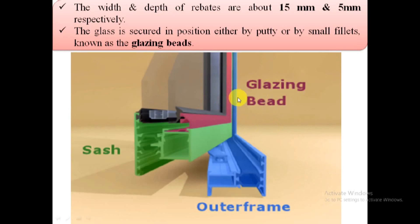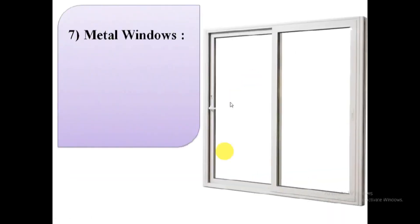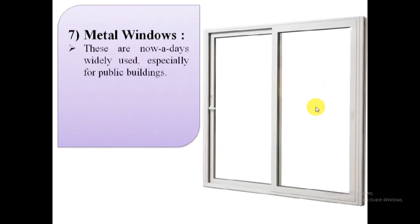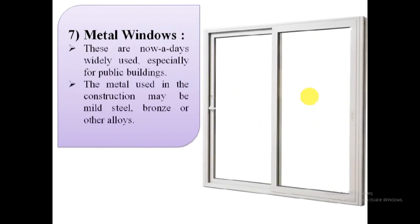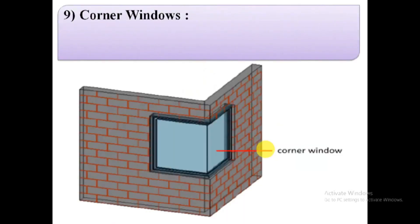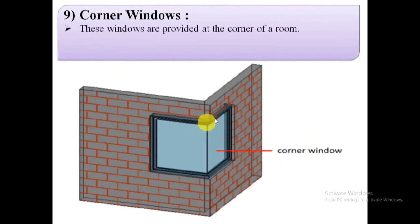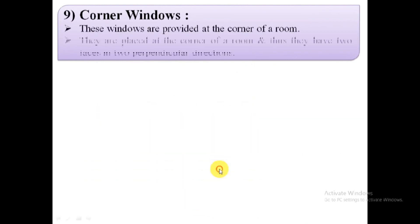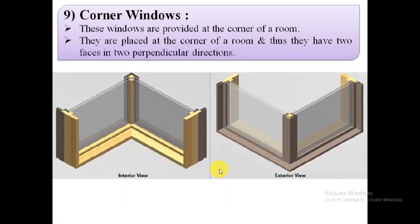7. Metal windows. These are a widely used type of window nowadays. 8. Circular windows. These are pivoted windows of circular shape. 9. Corner windows. This window has two faces in two perpendicular directions, so light and fresh air will be admitted from the two directions. It is a special type of window used in the corner of the room. The jamb post of the window at the corner is made of a big section.